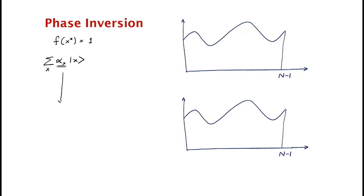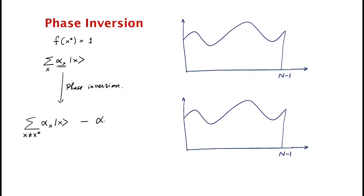What does the phase inversion step do? It changes the superposition like this: if x is not the special element, then it just leaves it alone. But if x is the special element, then it inverts the phase — it replaces it by minus alpha_{x*} |x*⟩.